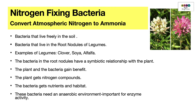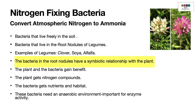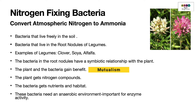There's also a group of bacteria that live in the root nodules of legumes — examples include clover, soya, and alfalfa — and they also fix nitrogen, converting it into ammonia. These bacteria have a symbiotic relationship with the plant: both species benefit, which is called mutualism. The plant gets its nitrogen compounds, and the bacteria get nutrients and a habitat.